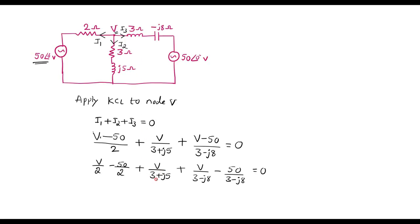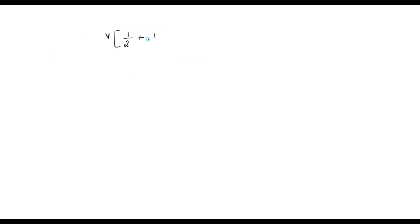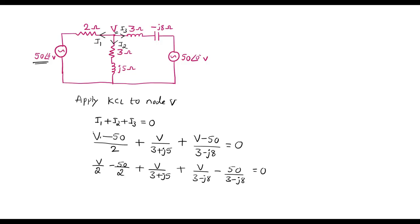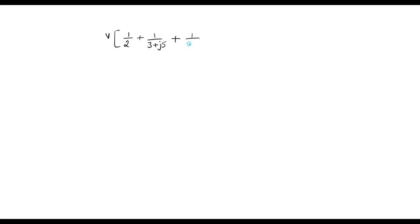Let me simplify this further. I will take V common, so it will be 1 by 2 plus 1 over 3 plus J5, plus coefficient of V is 1 upon 3 minus J8.